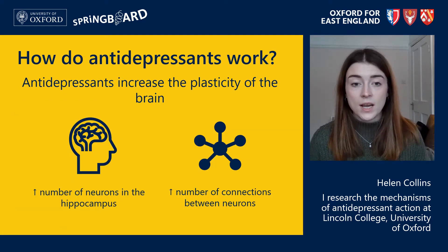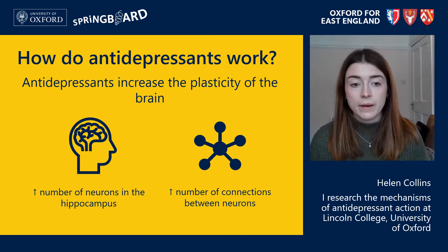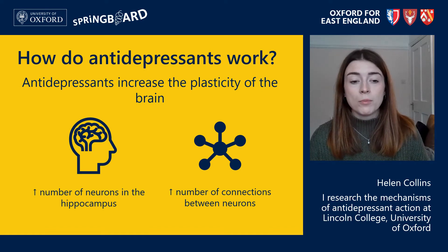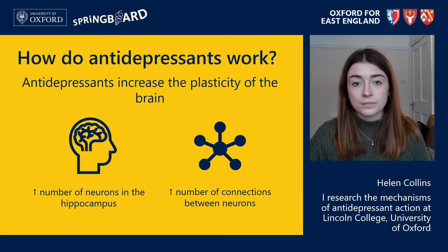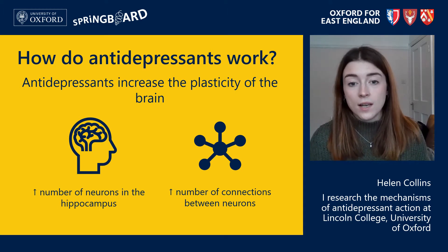But this increase in 5-HT at the synapses isn't enough to improve your mood on its own. In fact it can take between four and six weeks of treatment with an antidepressant for you to feel better. This is because there have to be some quite big changes in the brain. A big part of these changes is increasing the plasticity of your brain — its flexibility or ability to learn new things. Part of that comes from the fact that the brain will produce more neurons, particularly in the hippocampus, and there's also an increase in the number of connections or synapses between neurons.